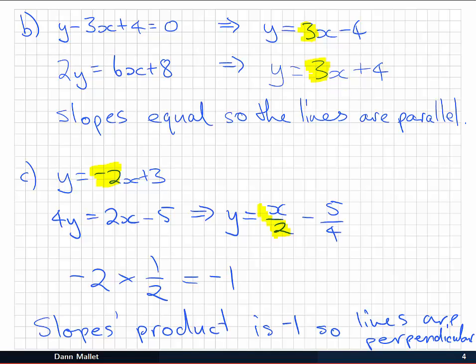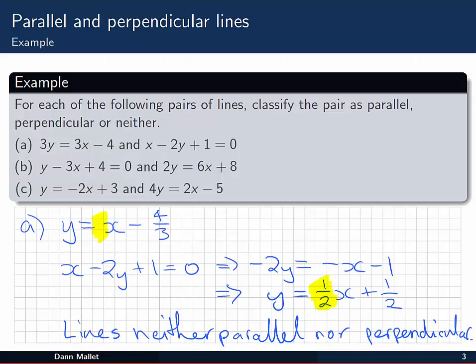Now if you're not really sure how this is all working, we've done everything algebraically here, just through the slopes being equal, or the slopes products being minus 1. If you want, go back and check out the video on plotting these lines. Plot the two lines in each case, and you should be able to see that they're either parallel or perpendicular, or in the case of part a, neither parallel nor perpendicular.